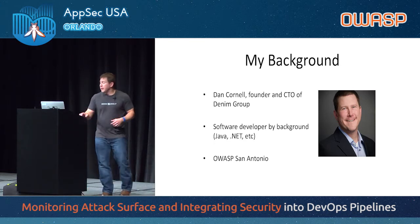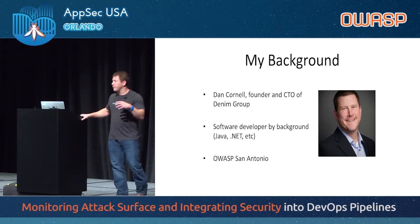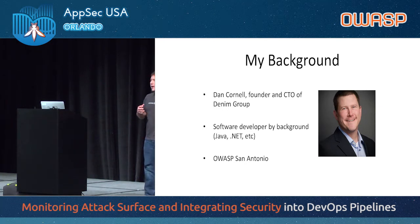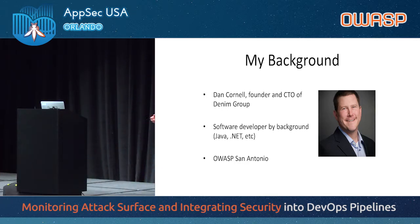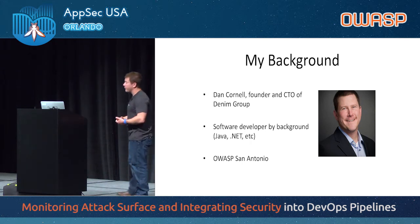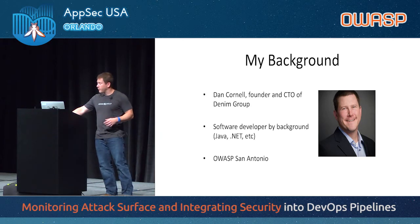My name is Dan Correll. I'm one of the founders and CEO of Dena Group, and I'm a software developer by background. That shapes the way I think about application security — I'm not a network pen tester now looking at web and mobile applications. Instead, I'm a software developer who has spent the better part of the last decade looking at how the software that organizations develop impacts the security of those organizations. I have a background in Java and .NET, and I help run the OWASP San Antonio chapter, so if you're in San Antonio or Texas, please come by.